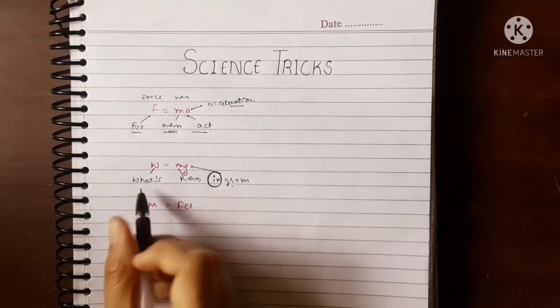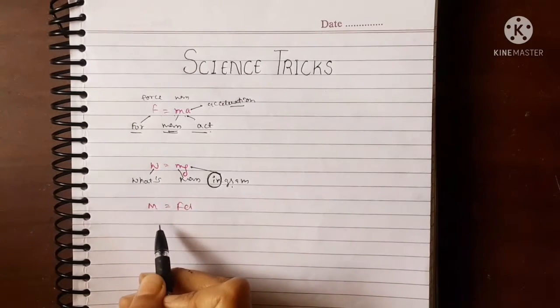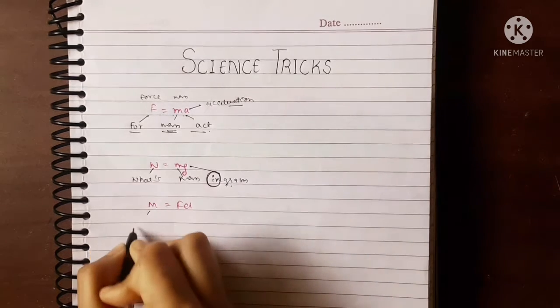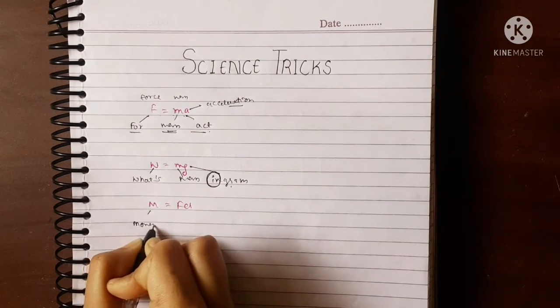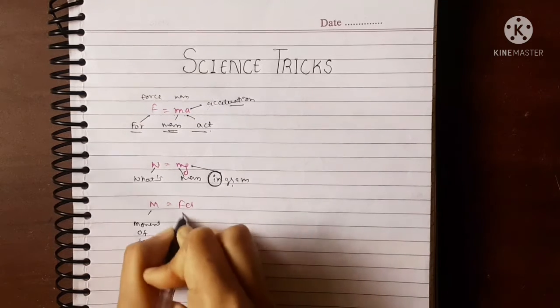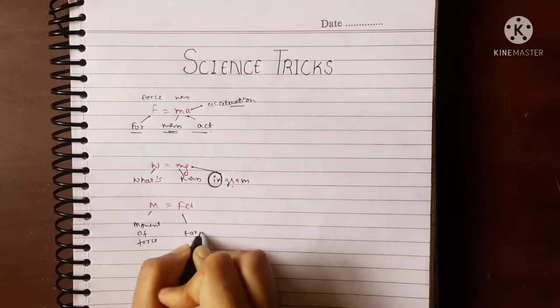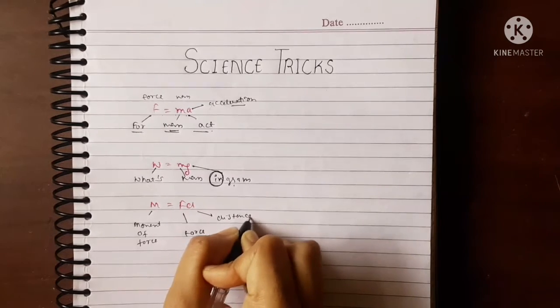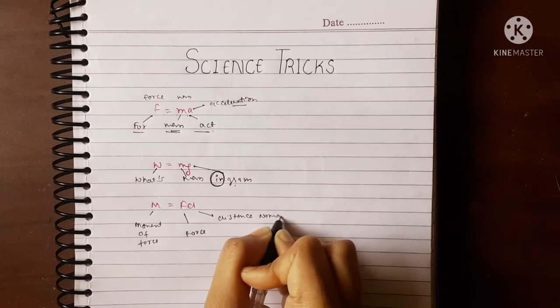This is the formula for weight. Another formula is M equals fd, that is moment of force. F represents your force and d represents your distance normal to the line of force.